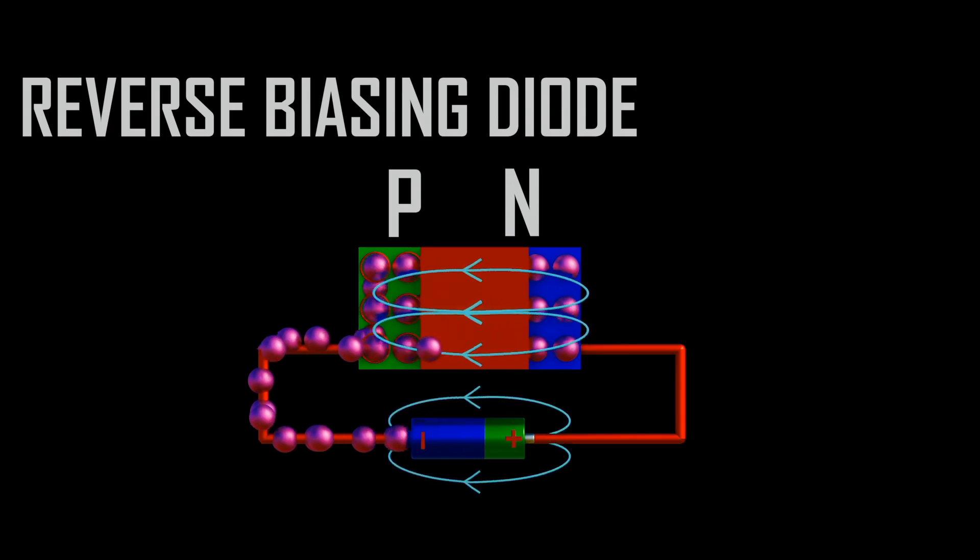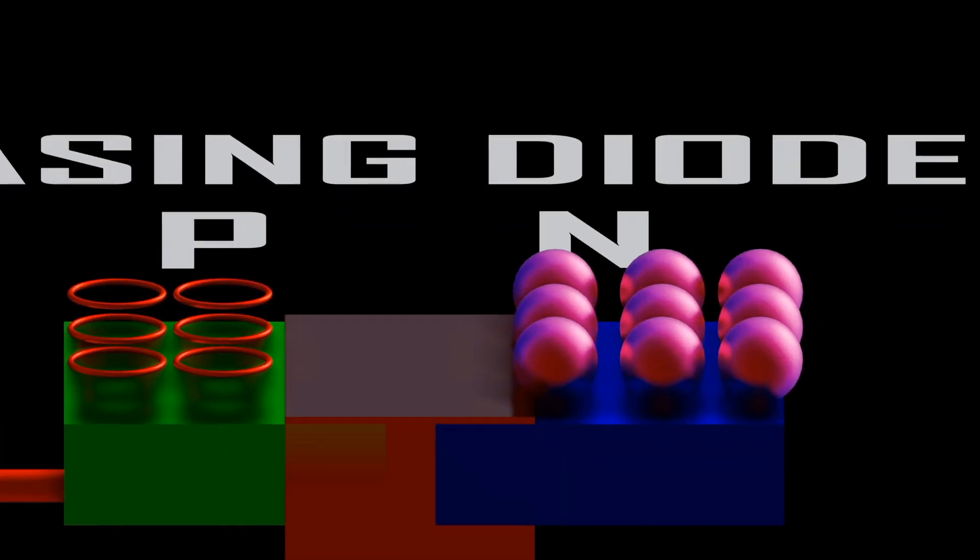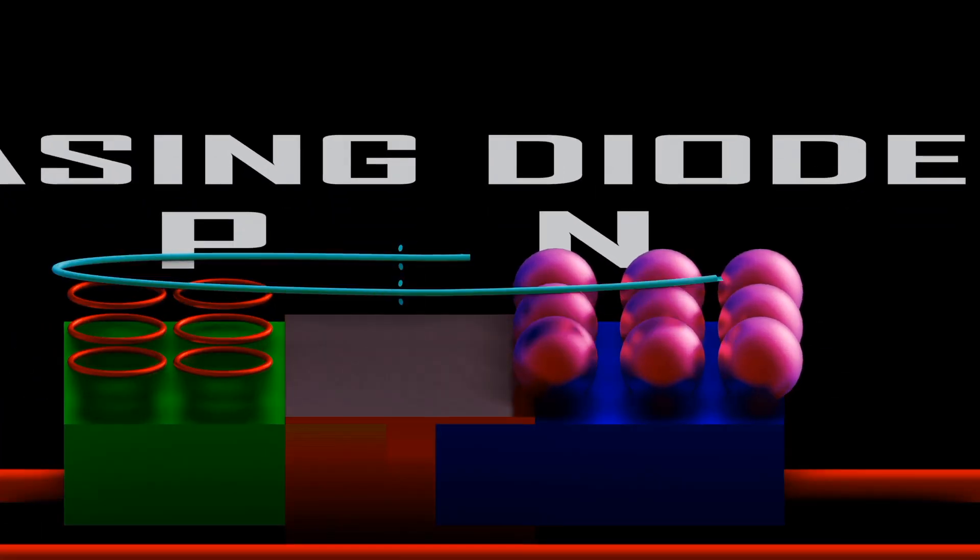Let me explain further. Electrons in N-type gain potential energy due to the electric field. The larger the band gap, the higher the wavelength of these photons.